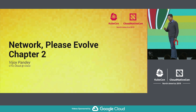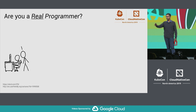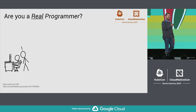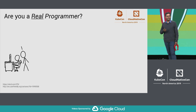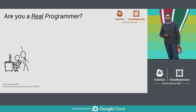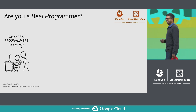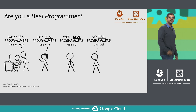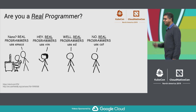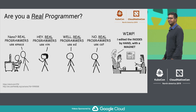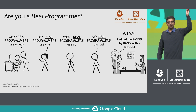But before I do that, I have a question for the audience: are you a real programmer? Now, before you raise your hand, let me point out that the comic strip you see behind me is a mash-up of two comic strips from XKCD and one from User-Friendly. In it, you see a programmer sitting at their desk, and a person approaches them and says, 'Nano — real programmers use Emacs.' And this begins a parade of people who say, no, real programmers use Vim or CAT or ED. But the clincher is when somebody walks up and says, 'You guys are all wimps — real programmers use magnets to edit the inodes directly on disk.'